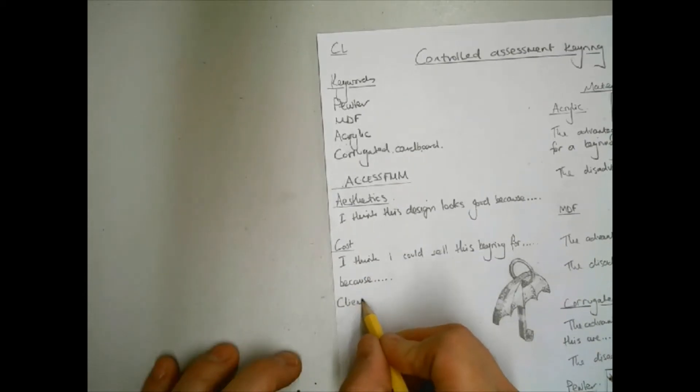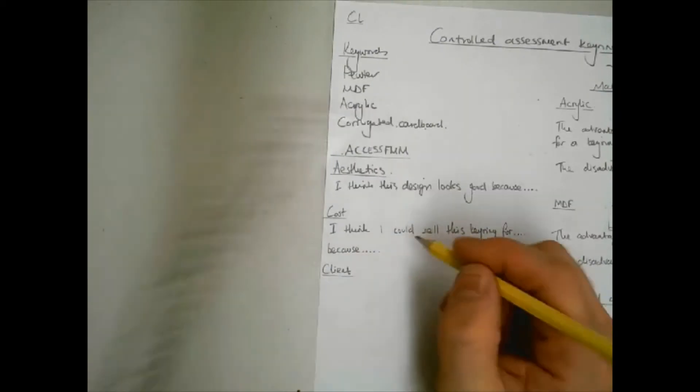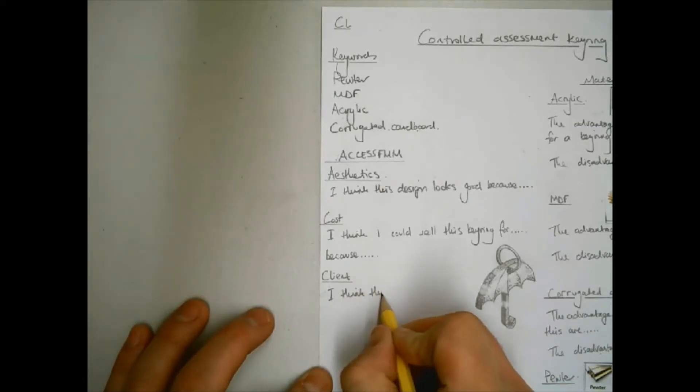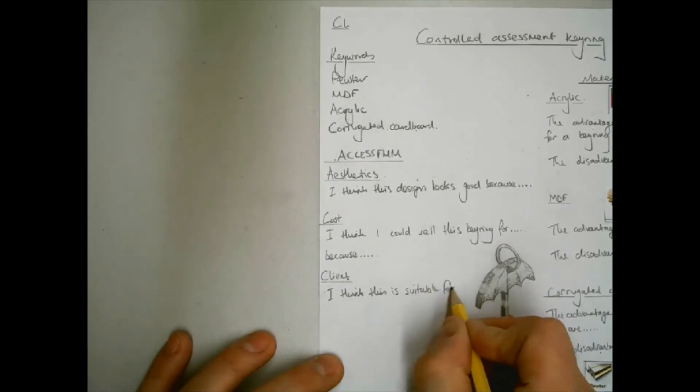The third letter is also a C. This stands for client. The things that need to be considered at this stage are things like the colour and the design and if they are suitable for the client. The word client just means who you are designing the product for.